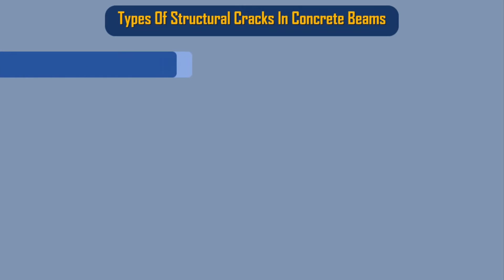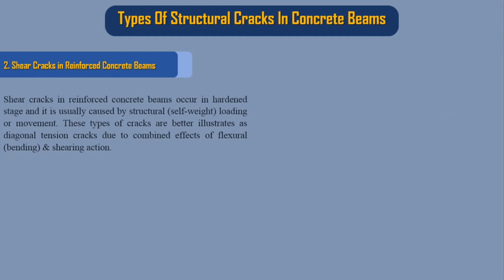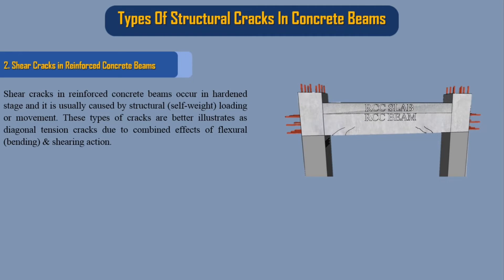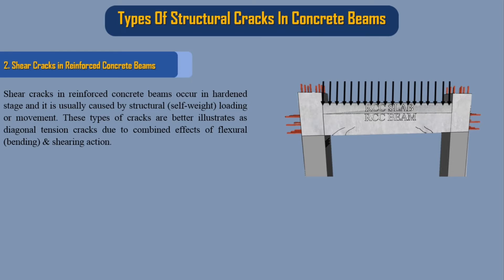Shear cracks in reinforced concrete beams occur in the hardened stage and are usually caused by structural self-weight, loading, or movement. These types of cracks are better illustrated as diagonal tension cracks due to the combined effects of flexural bending and shearing action.